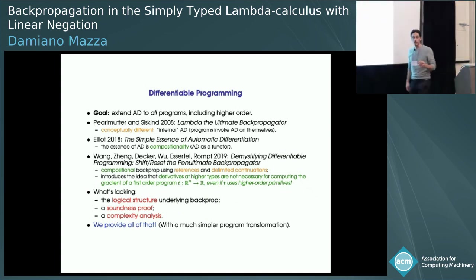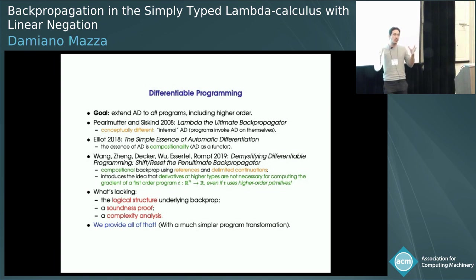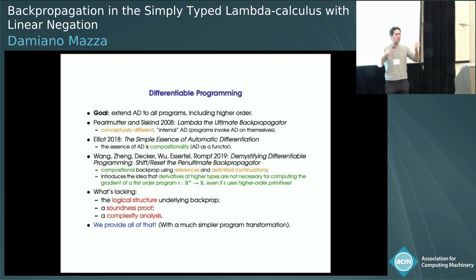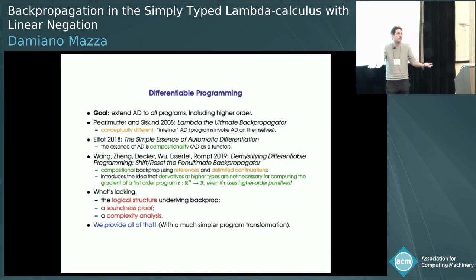More recently, people have started to specify neural networks using programs more complex than just straight-line programs. Everybody agrees a neural network is a special case of a straight-line program, but you can imagine a much more complex program that reduces to a straight-line program — a neural network — according to some input parameters. The interface is always real numbers to real numbers, so it always makes sense to compute the gradient, but internally the program can be much more complex, containing lambdas, maps, folds, and higher-order constructs.